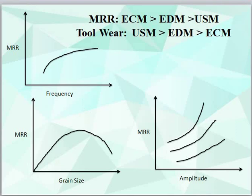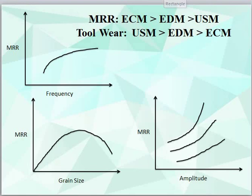A comparison has been made between ECM, EDM, and USM. Metal removal rate is highest in ECM, then EDM, then USM. Tool wear is highest in USM, then EDM, and least in ECM. These data points are very important and are commonly asked in interviews and examinations.